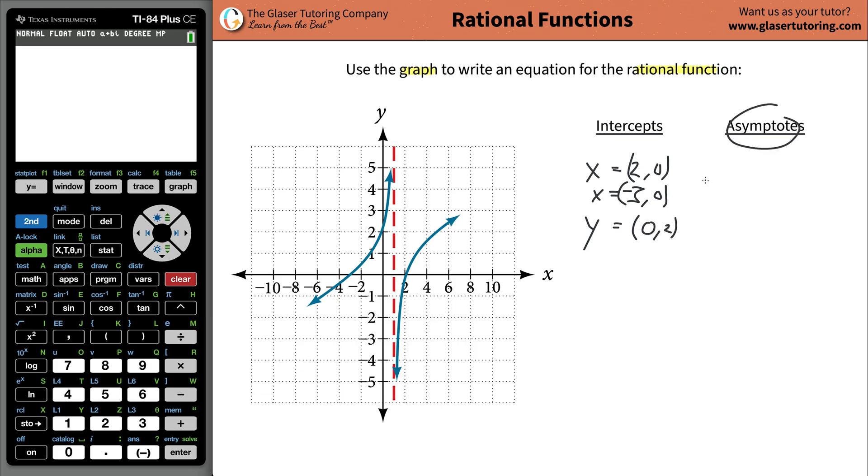Next thing is to take into account the asymptotes. Most notably, we want to focus on the vertical asymptotes. It also turns out that in this problem there is a horizontal asymptote. You might have noticed it.